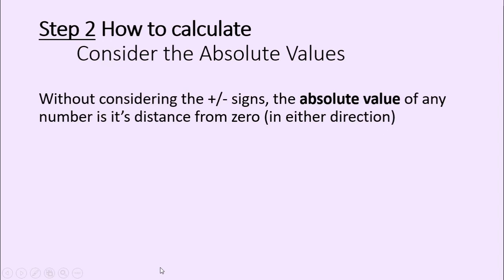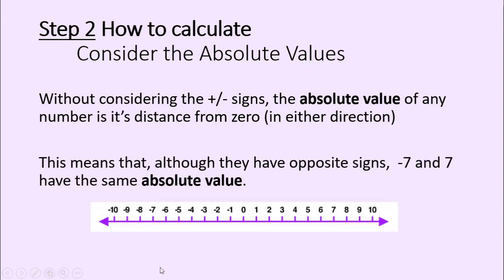Next, step two — how do I calculate? Without considering the plus or minus signs, I'm going to look at the absolute values first. The absolute value of any number is its distance from zero in either direction. Let me show you this on a number line. Although they have opposite signs, negative seven and positive seven have the same absolute value because they're the same distance from zero. So absolute value is the number without the sign — just the value of that number.